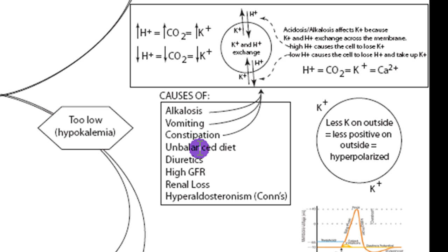An unbalanced diet low in potassium can cause hypokalemia, since the GI tract isn't particularly good at absorbing potassium. Diuretics often reduce potassium levels because the high GFR causes potassium to be lost — it doesn't have time to reabsorb from the filtrate back into the peritubular capillaries. Other mechanisms include insufficient sodium-driven reuptake in the proximal convoluted tubule. Hyperaldosteronism also causes hypokalemia: aldosterone stimulates the sodium-potassium ATPase to reabsorb sodium, but in exchange, potassium is lost into the filtrate.